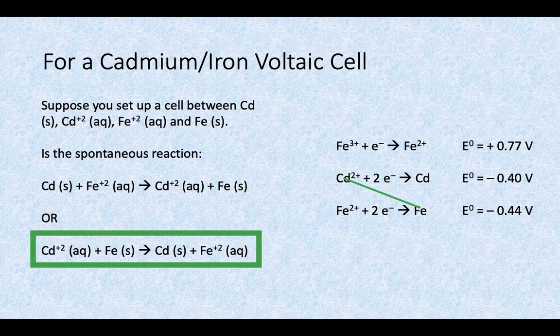The iron is the one losing the electrons, oxidized. Oxidation happens at the anode. So if our reaction, our equation is cathode minus anode,